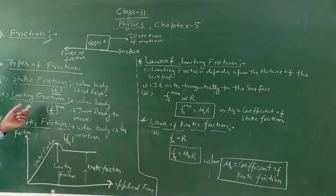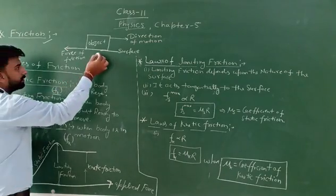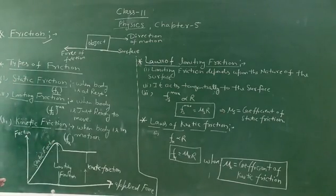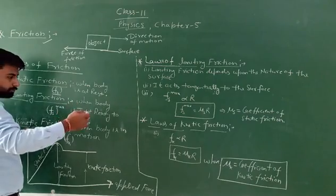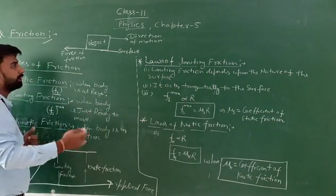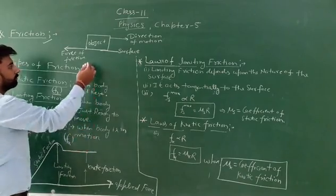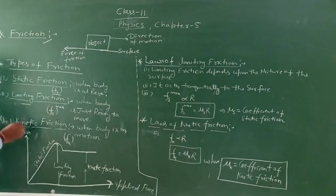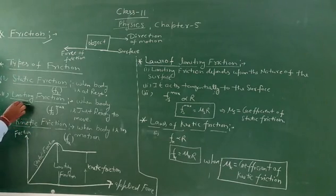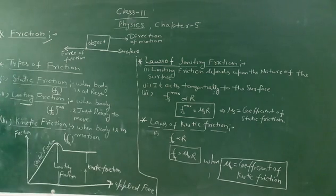Next is limiting friction. Limiting friction is the friction when the body is just ready to move — that is, just about to start moving. This maximum value of static friction is known as limiting friction, and it is denoted by F maximum. So limiting friction is also known as the maximum value of static friction.